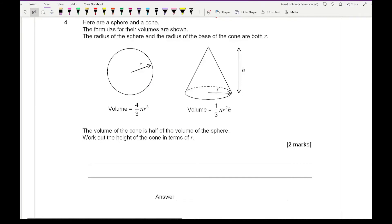Moving on to question 4, it says here are a sphere and a cone. The formulas for their volumes are shown. The radius of the sphere and the radius of the base of the cone are both R. And it says the volume of the cone is half the volume of the sphere. Work out the height of the cone in terms of R. Now for this, we really do need to make sure that we're understanding what this line here means. Now what that then means is if the sphere is twice the volume of the sphere, then what I need to do is half the volume of the sphere is going to be equal to the volume of the cone. And that's something that you really do need to be able to understand in terms of, because obviously now what we're going to do is substitute these formulas into this.